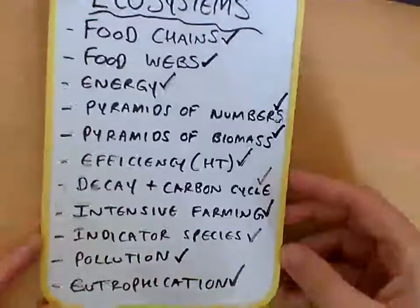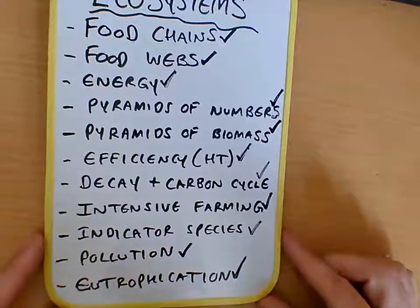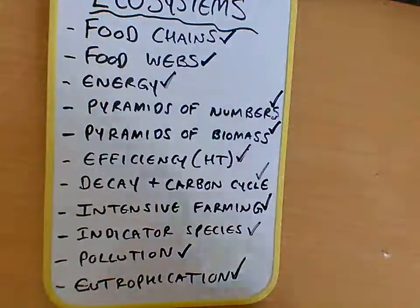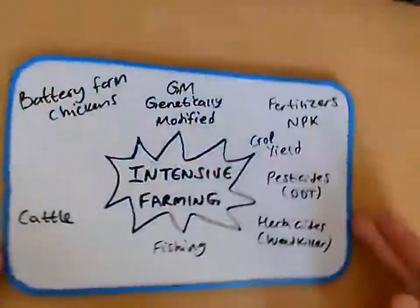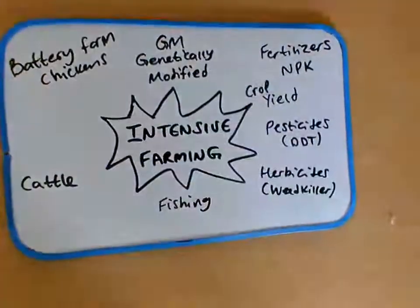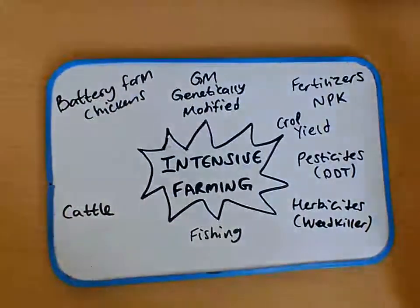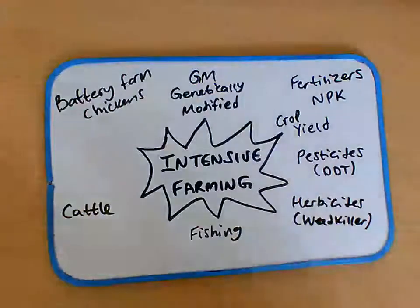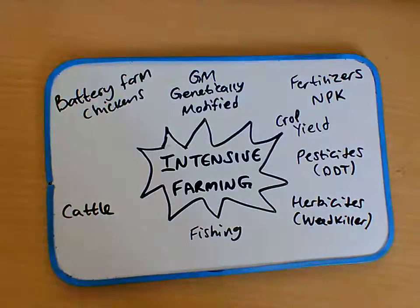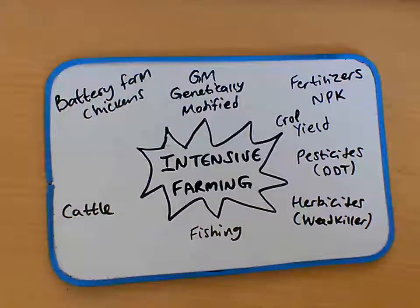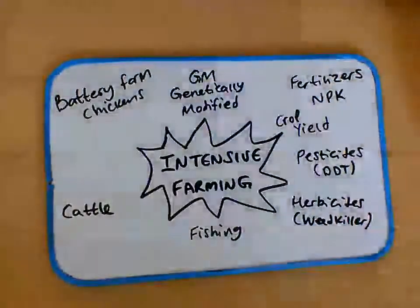In the last video we looked at indicator species. Now I'm going to finish off the topic by looking at intensive farming. We'll split this into two main sections: plants and animals. Intensive farming is an agricultural intensification and mechanization system that aims to maximize yields from available land through various means, such as heavy use of pesticides and chemical fertilizers.